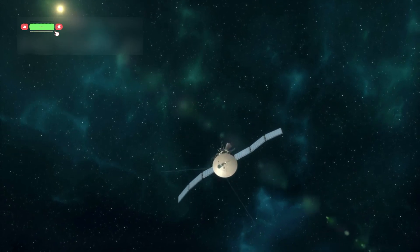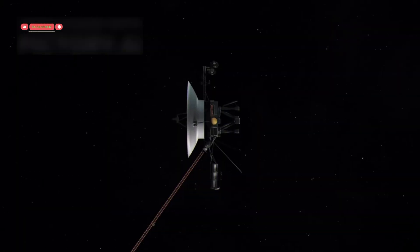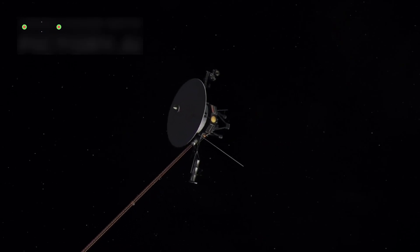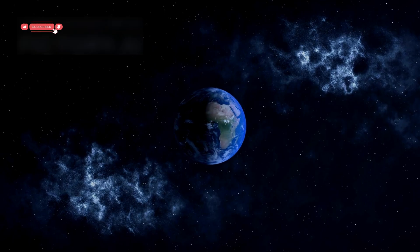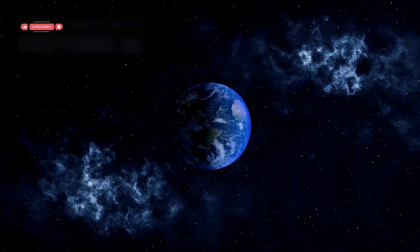Even now, the Voyager probes can surprise us. In 2022, Voyager 1 started sending confusing signals from its attitude control system, which points the antenna at Earth. The data made the spacecraft seem confused about its orientation. This did not stop the probe from working, but it puzzled engineers at NASA's Jet Propulsion Laboratory. Each command to the probe takes about 20 hours to travel, so fixing problems is very slow.